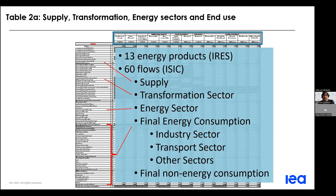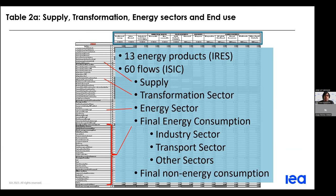Table 2A is the largest table, with 13 products listed across the top and more than 60 flows. Regarding the definition of energy products, we follow the international recommendations on energy statistics. Most products are reported in terajoules on a net calorific basis, except for charcoal and liquid biofuels which are reported in kilotons. The rows are broken up into supply, transformation sector, energy sector, and final energy and non-energy consumption sectors. Final consumption is divided into industry, transport, and other sectors including residential and agriculture. Energy sector and final consumption flows should be reported according to the international standard industrial classification categories.